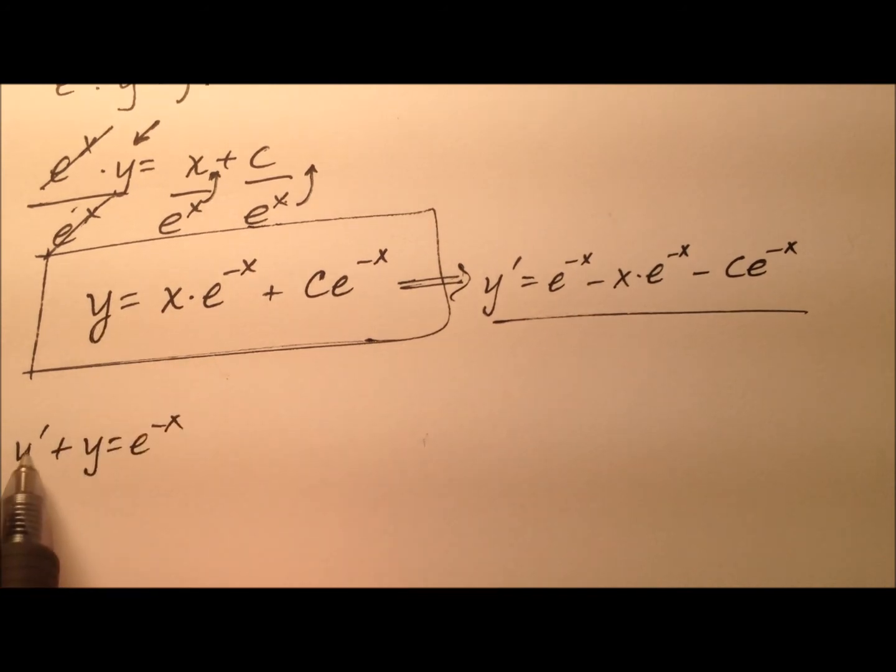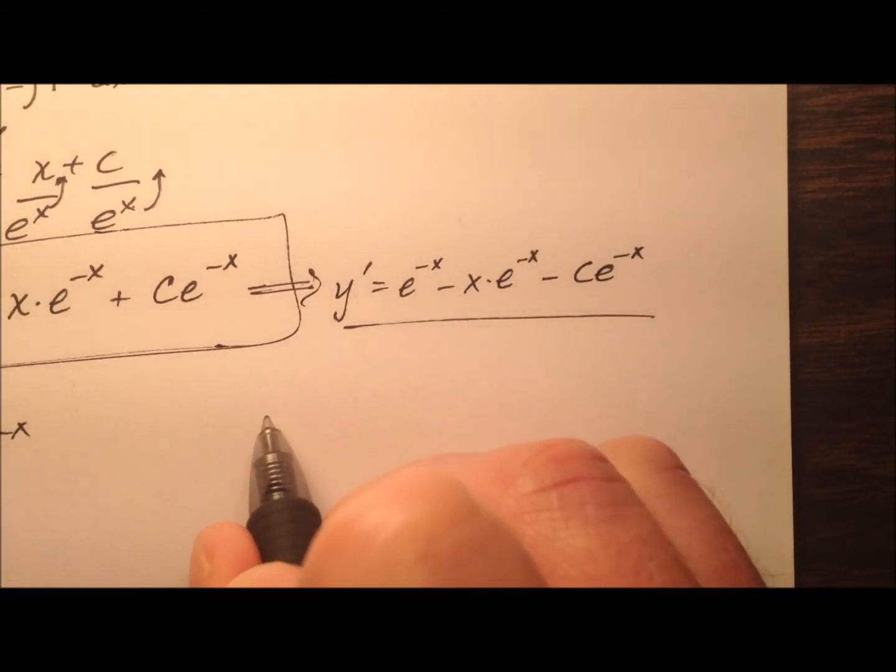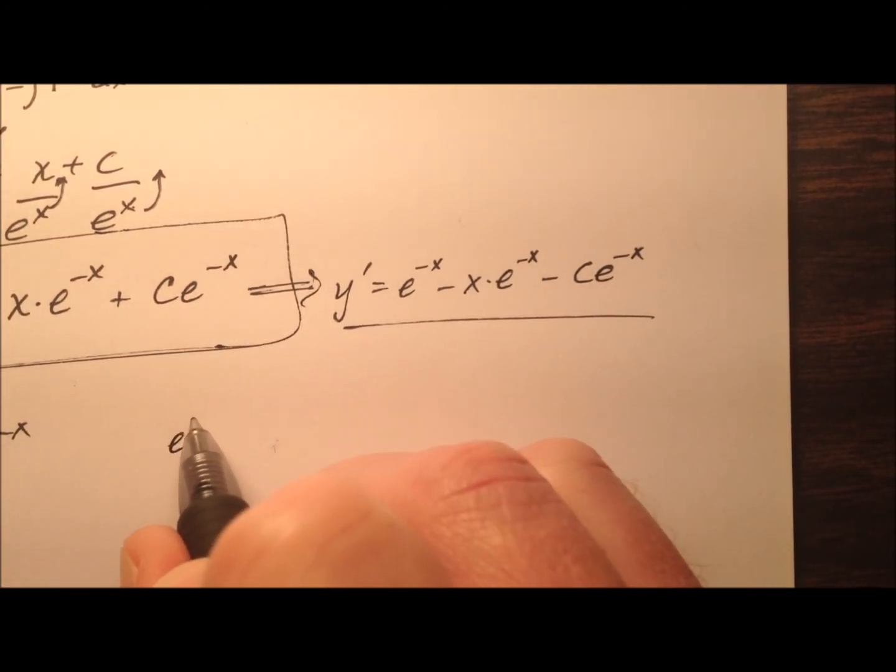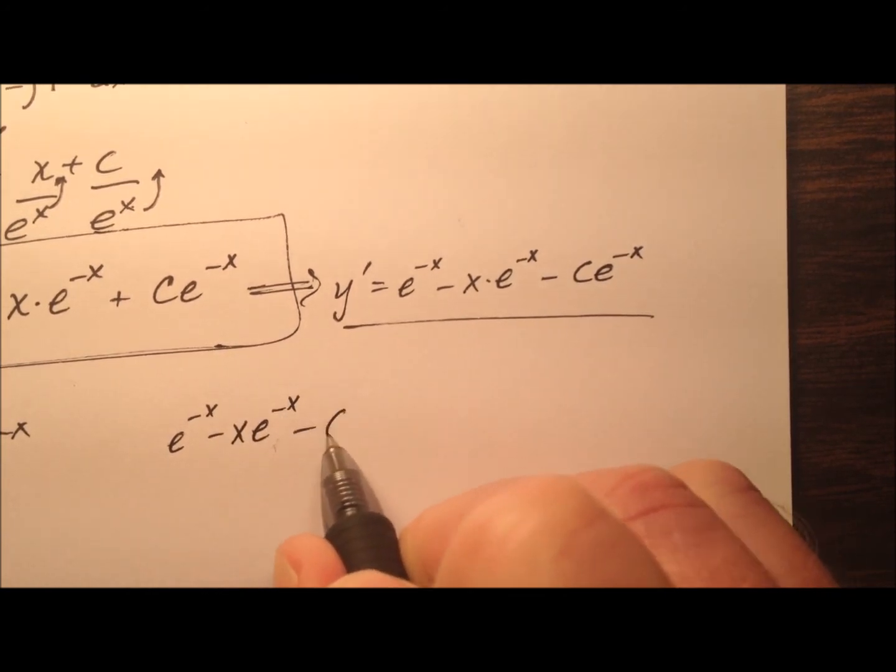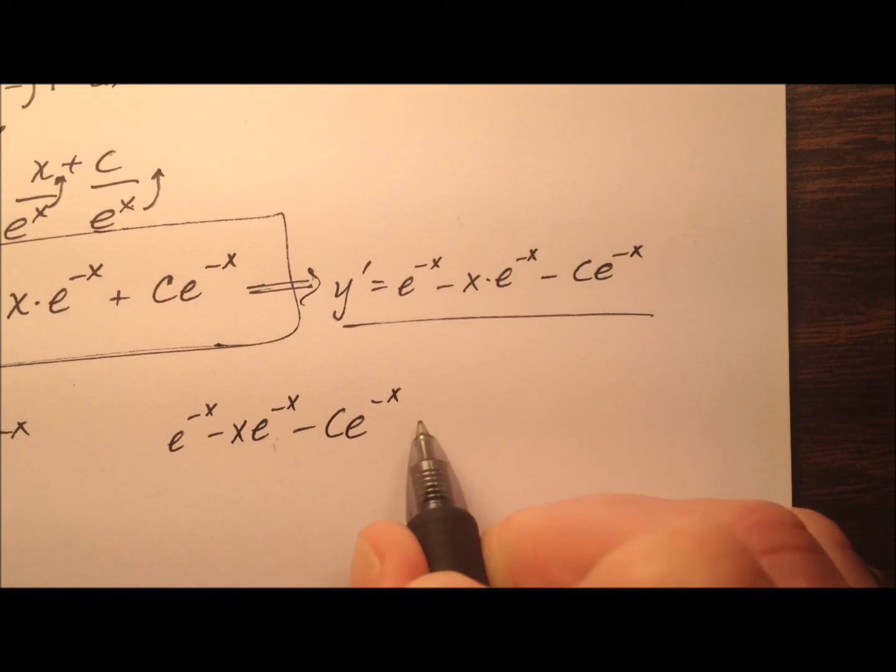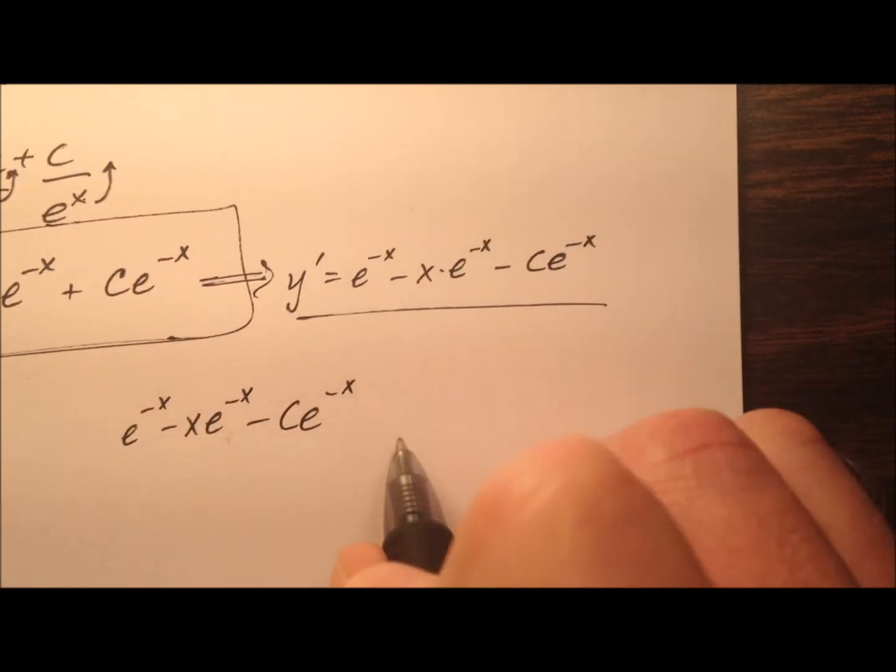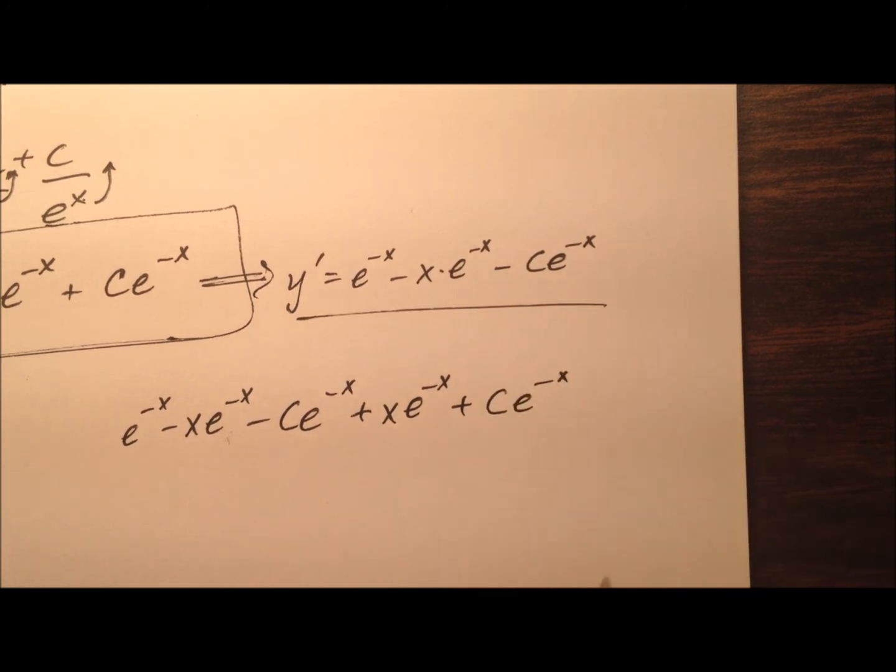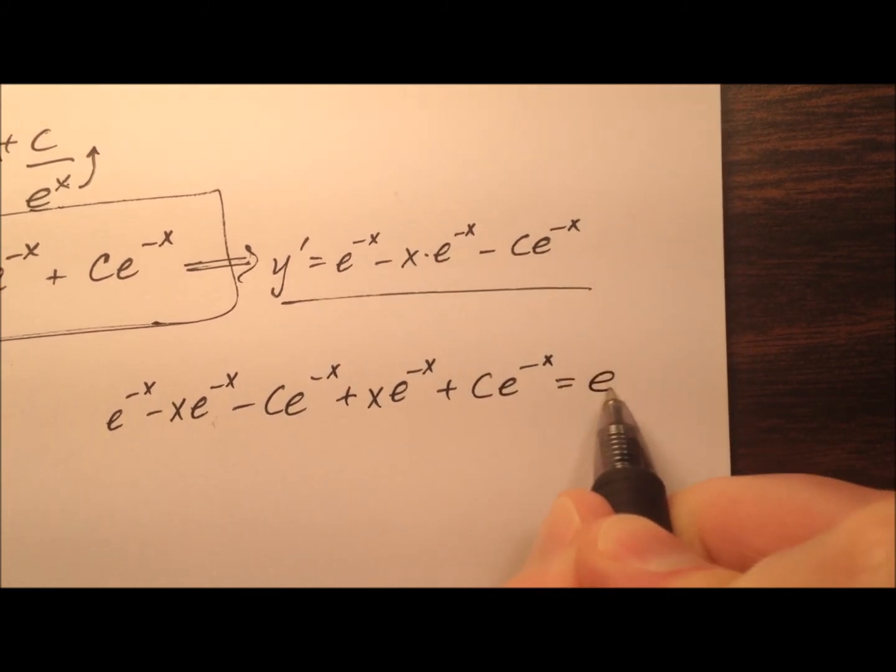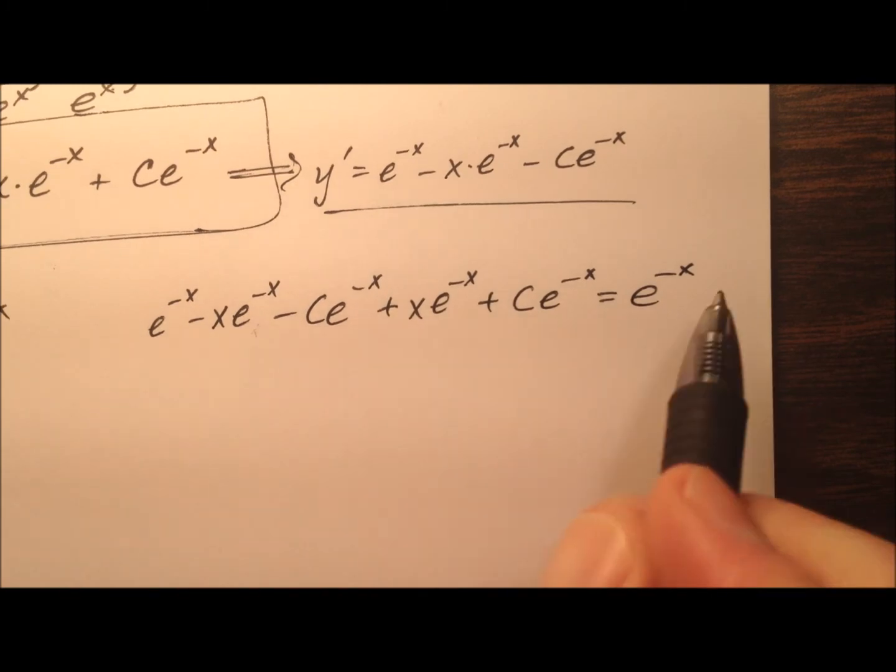Okay, so y' + y. So I'm going to add this y', which is e^(-x) minus x e^(-x) minus c e^(-x), and I'm going to add that to my solution here. So plus x e^(-x) plus c e^(-x), and I should get e^(-x) when I'm done. Okay, a lot of stuff going on here.